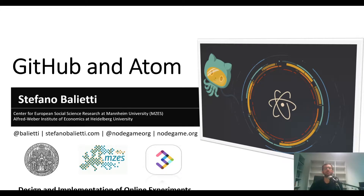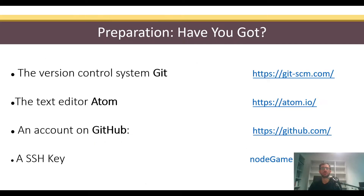We're going to configure GitHub to work with Atom, your editor. Atom is actually the editor created by the GitHub community, so it's specifically integrated with GitHub and Git. What you need: Git installed, the text editor Atom, an account on GitHub, and optionally but very recommended, an SSH key.